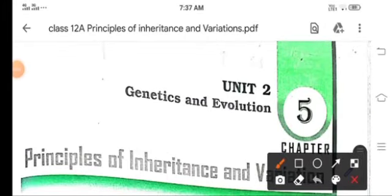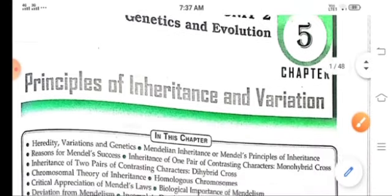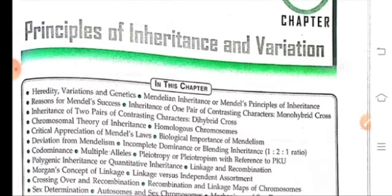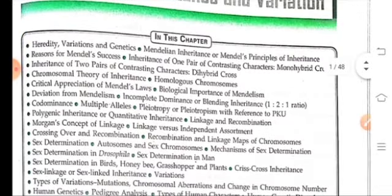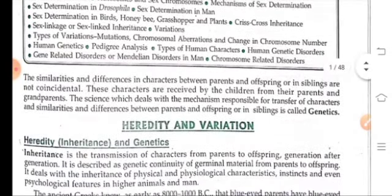Good morning children, welcome to biology class. Today we are going to start Unit Two: Genetics and Evolution, Chapter 5 — Principles of Inheritance and Variations. In this chapter we are going to study about heredity, variation, genetics, Mendel's experiments, sex determination, sex linkage, and many more.